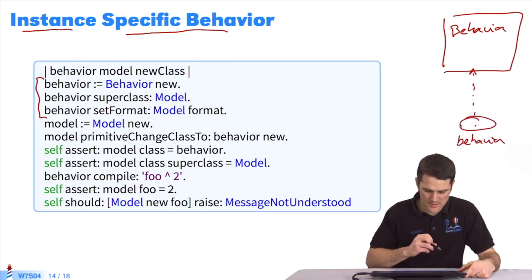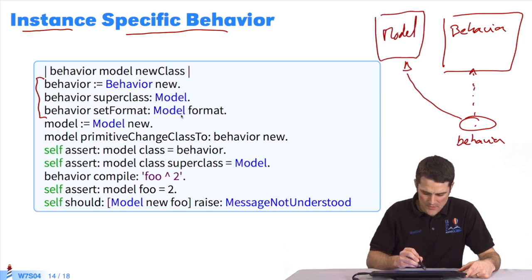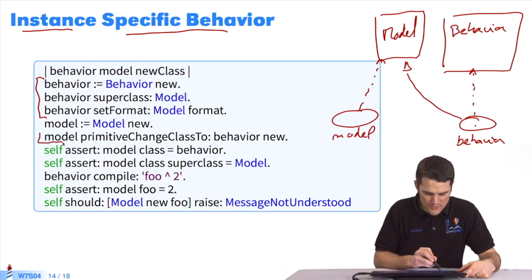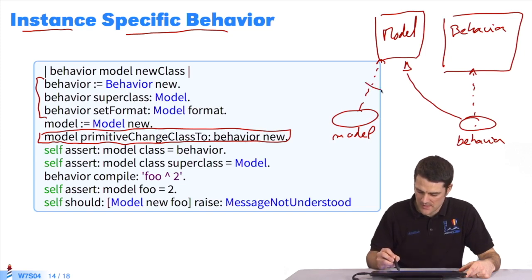That gives me an object named behavior. I indicate that this object inherits from model class. Like this. I set the format of this object behavior. Then I create an instance of model class here. It's an object named model. Here is the important line in this code. I'll change the class of this object model to become a class of the object passed as a parameter named behavior. I break the link and make it an instance of this class.